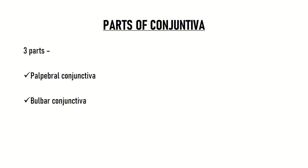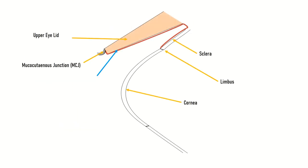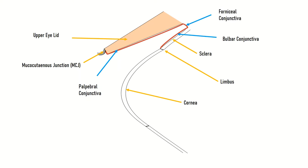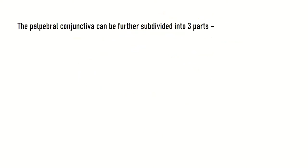The conjunctiva can be broadly divided into three parts: the palpebral conjunctiva, the bulbar conjunctiva, and the fornicial conjunctiva. The conjunctiva covering the posterior surface of the eyelid is known as the palpebral conjunctiva. The conjunctiva covering the surface of the globe, which is the scleral surface, is known as the bulbar conjunctiva. The transition between these two — between the palpebral and the bulbar conjunctiva — is known as the fornicial conjunctiva, or simply the fornix.